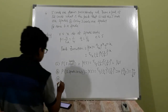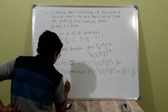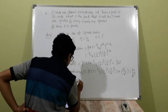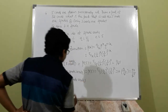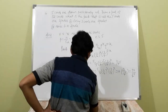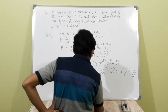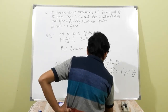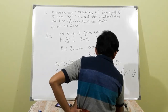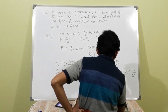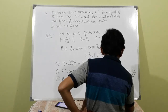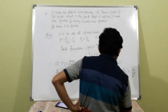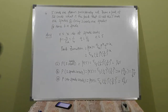For none is a spade: P(X = 0) = 5C0 · (1/4)^0 · (3/4)^5 = 1 · 1 · (3/4)^5 = 3⁵/4⁵, or equivalently (3/4)^5.